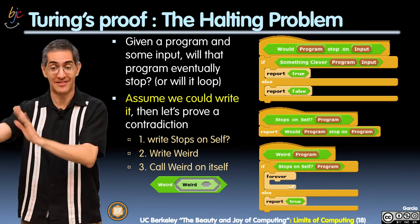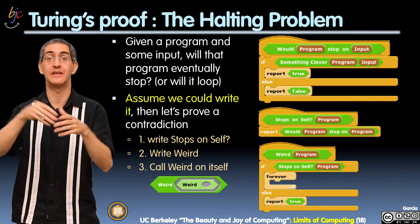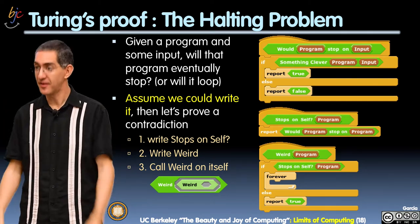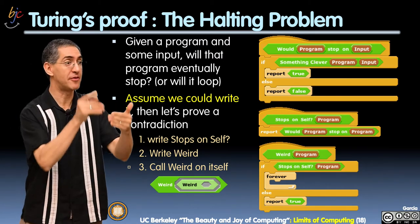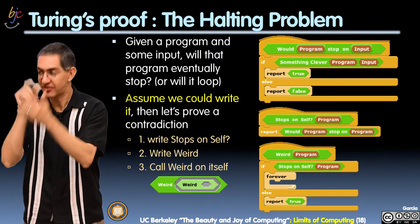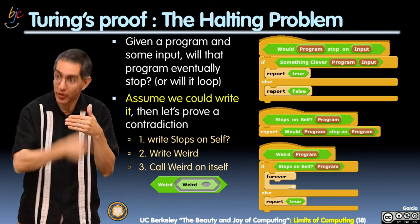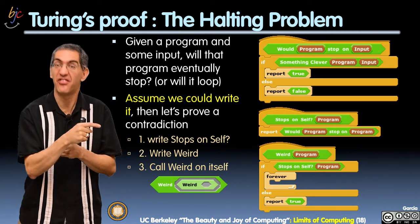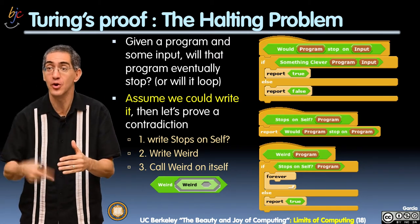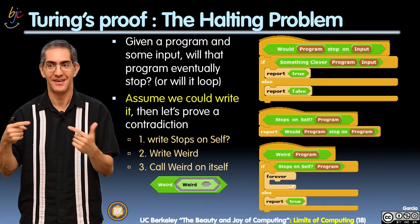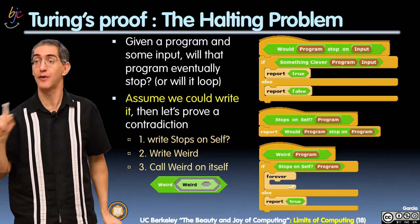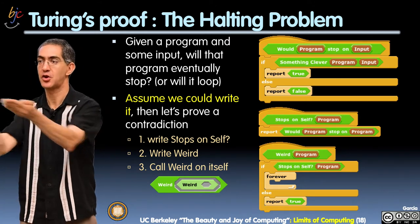Let's look at weird. You said weird would stop on itself, right? You said it would. So weird passes into weird — that's going to stop on itself. Now what does weird do? You tell me stops on itself is true for weird. Stops on self of weird — you say true. So watch: if stops on self of weird is true, what does weird do? It runs forever. Wait — you just told me that stops on self of weird is true, so it would stop on itself. But what happens? Weird on weird runs forever. How can you both stop on self and run forever? Contradiction. Impossible.